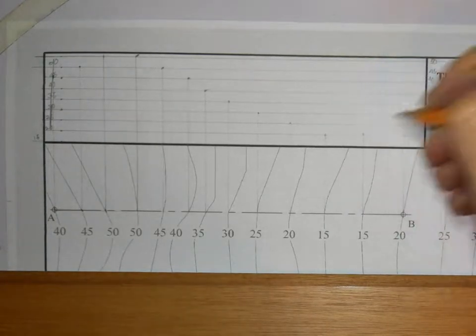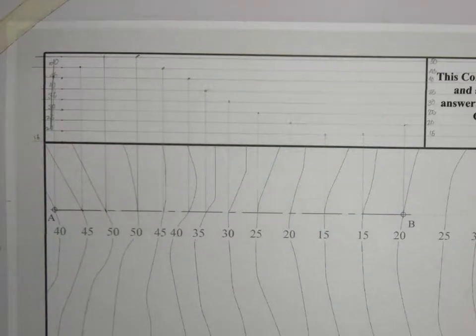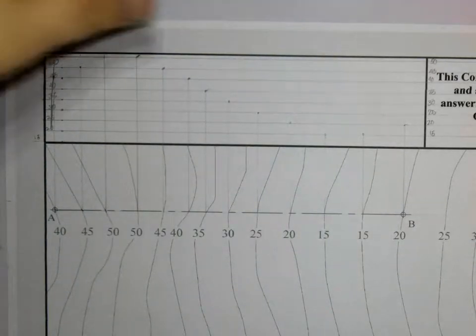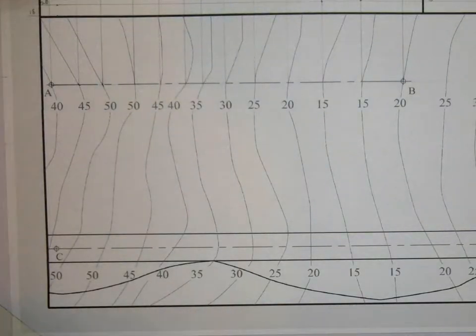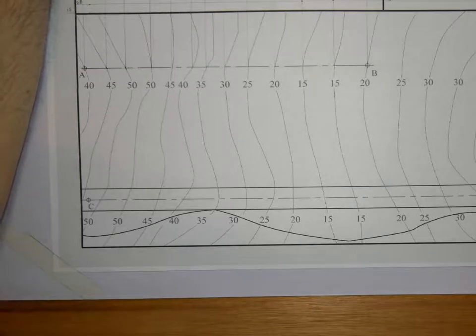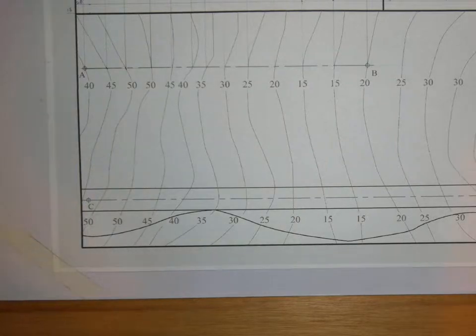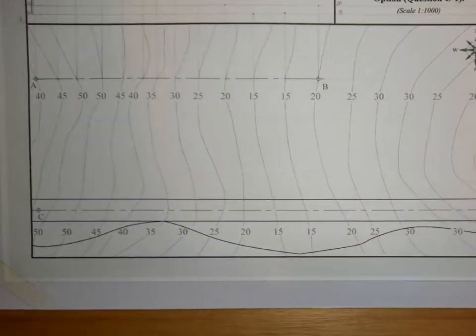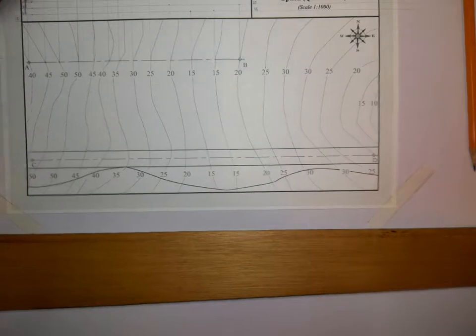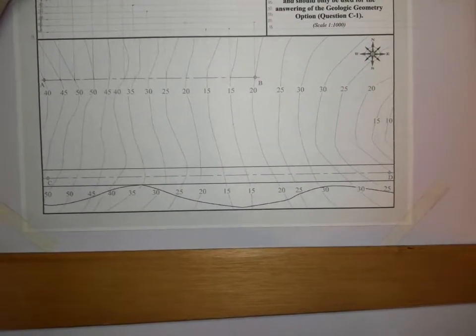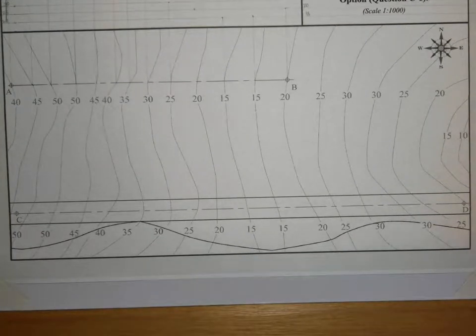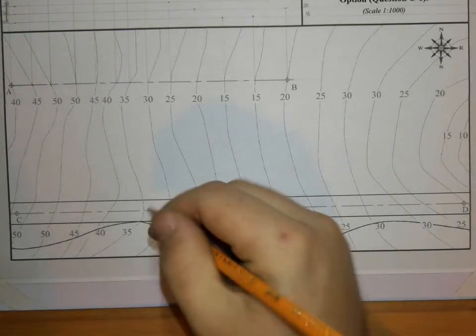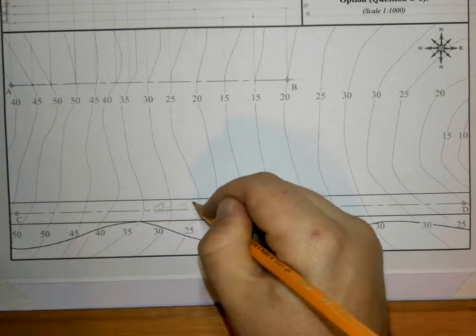So on the next part of the question, it says the road is level at an altitude of 35 meters. I'll zoom out here now. Right, there we have it, at 35 meters.